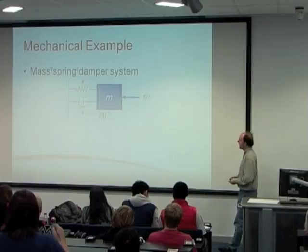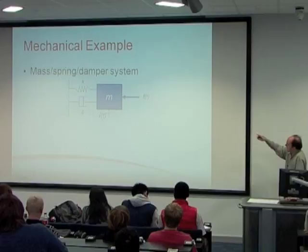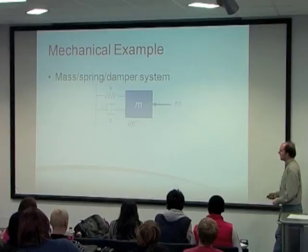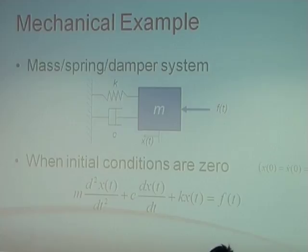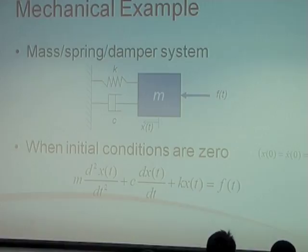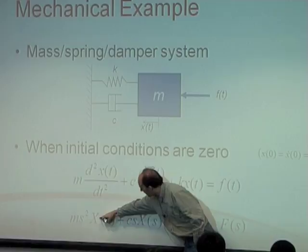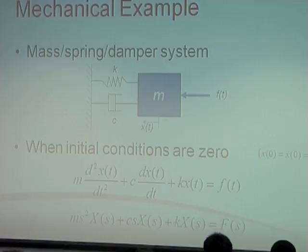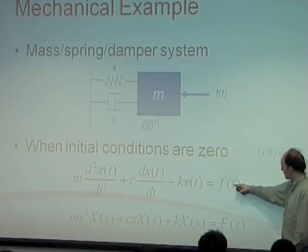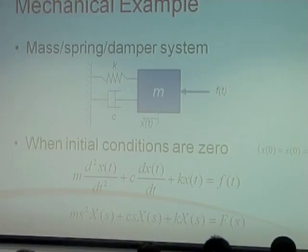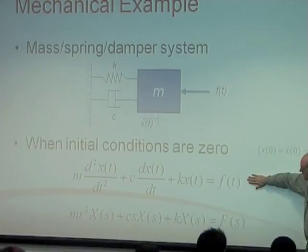Let's look at an example — the mass-spring-damper system. We have our differential equation: MẌ + CẊ + KX = F(t), with initial conditions zero. Every time we see a d/dt, we replace it with S times capital X. So we get MS²·X(S) for the acceleration term, CS·X(S) for the velocity term, and K·X(S) for the displacement — since there's no d/dt in that term. The function of time turns into a function of S in the S domain. That's a simple conversion from a differential equation to the S domain — from a horrible second order differential equation to a nice algebraic equation, which is just a quadratic in S.